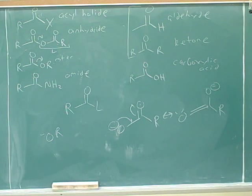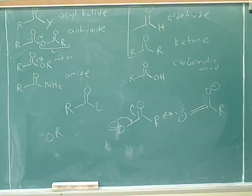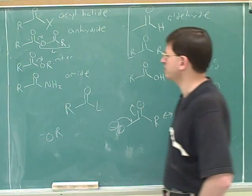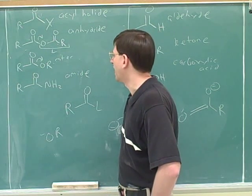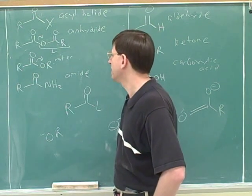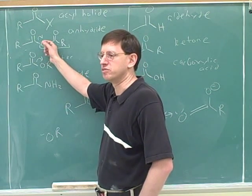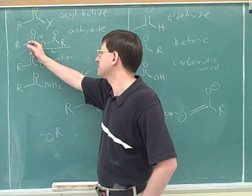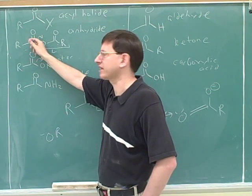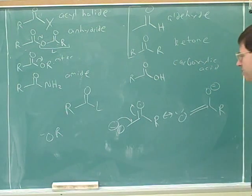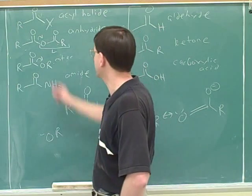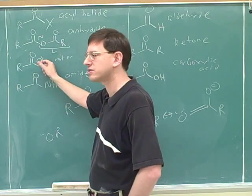One thing that's crucial for all these problems is to correctly identify the leaving group — the L group — up front. It should usually be pretty simple, although it's harder when you're in the middle of a reaction. This is maybe the trickiest case: identify which carbonyl got attacked, and that tells you the leaving group.